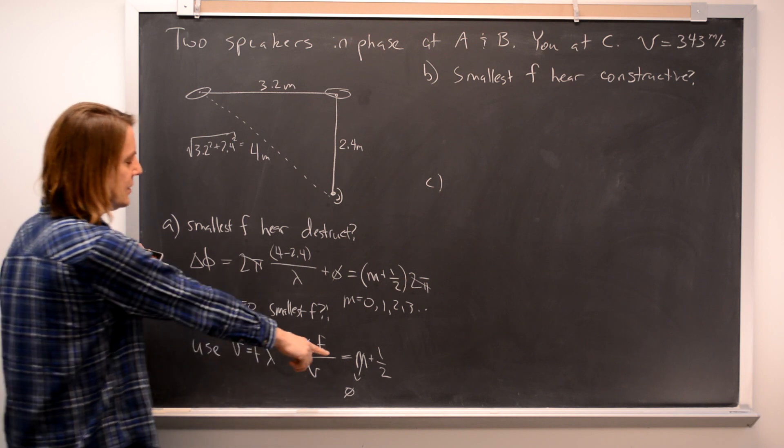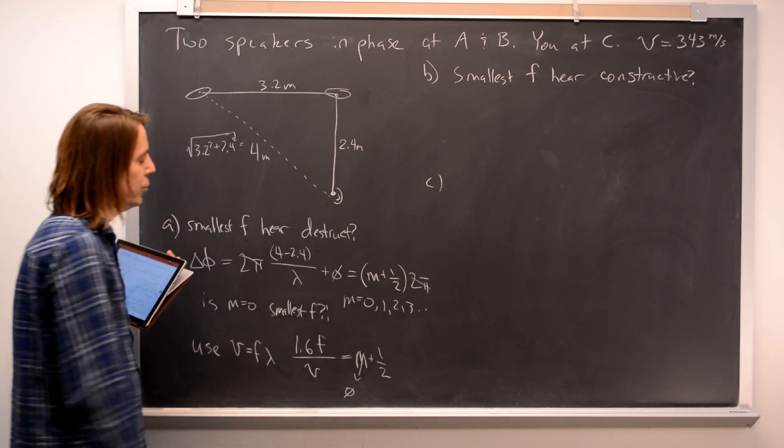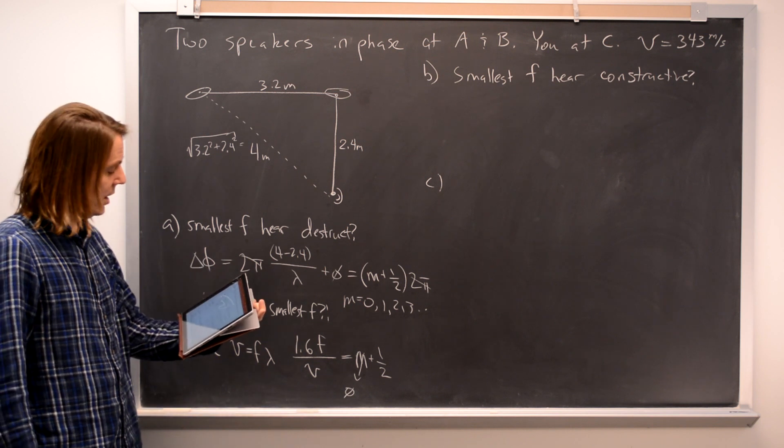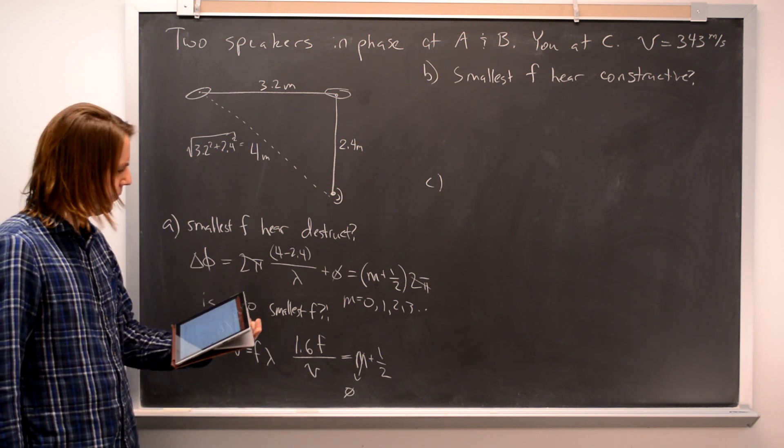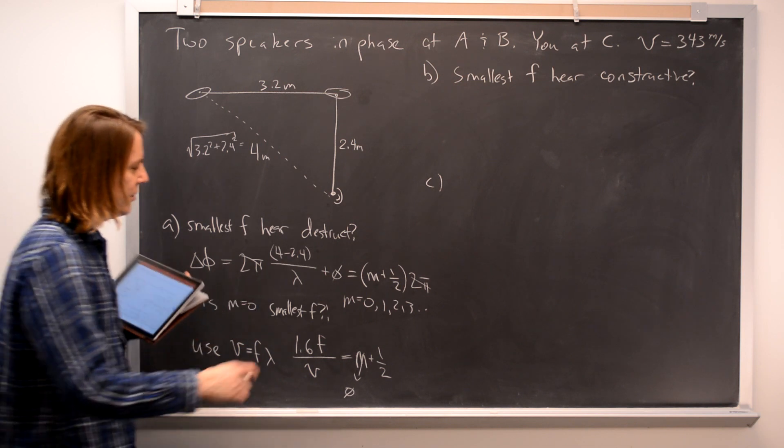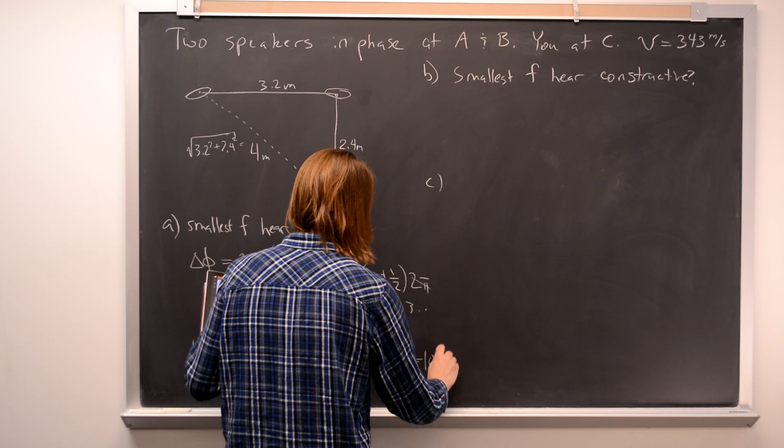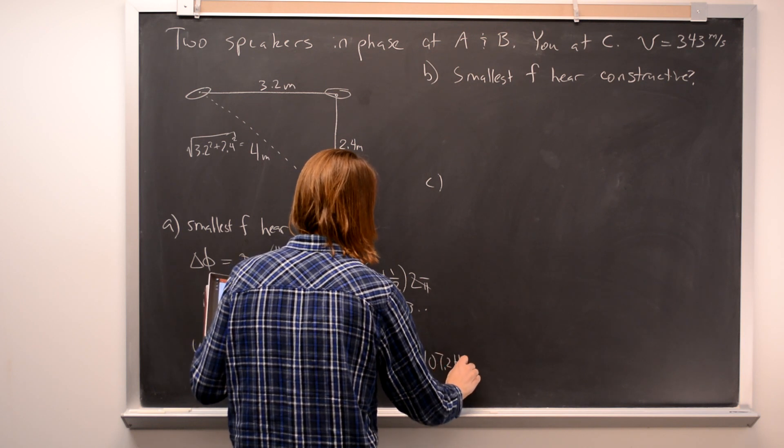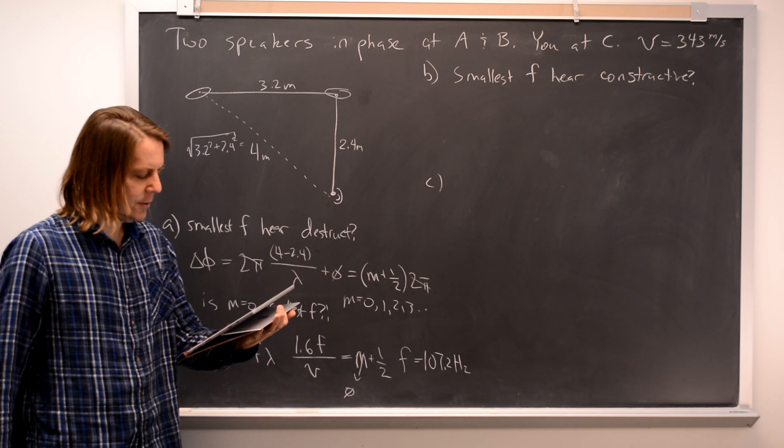And now maybe it's a little easier to see mathematically that, yeah, the smallest frequency here in the numerator is going to be when M equals 0. So you just get that frequency is V over 2 times 1.6. And the number I get is 107 hertz. 107.2.